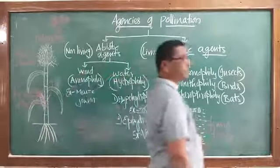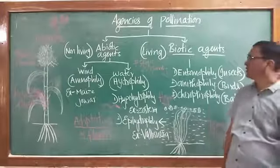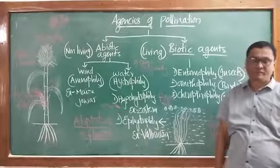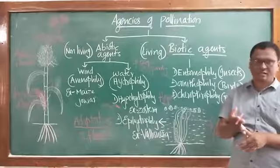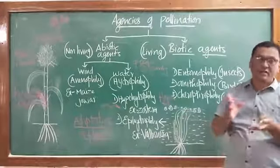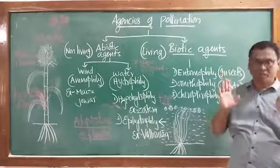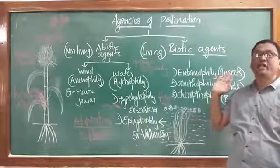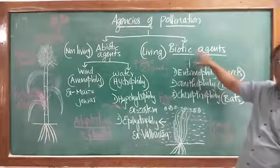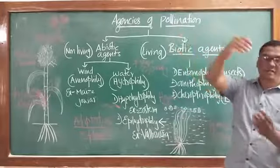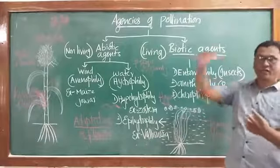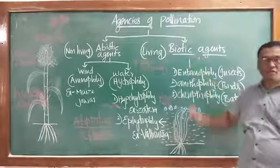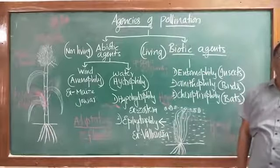Next come biotic agents for pollination — pollination brought about by living organisms such as insects, birds, bats, snakes, and ants. More than 80% of pollination is brought about by biotic agents, where living organisms help in the transfer of pollen grains from the anther to the receptive stigma.